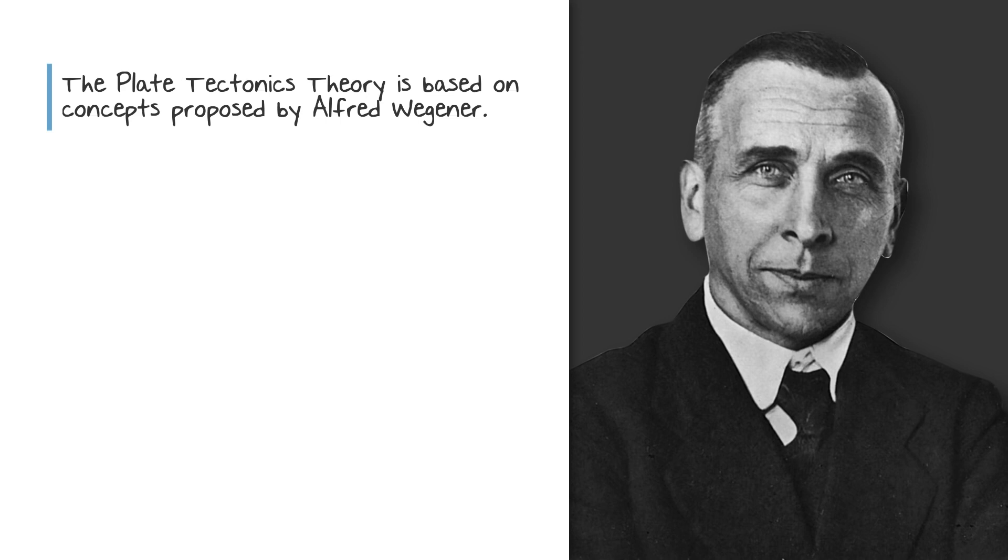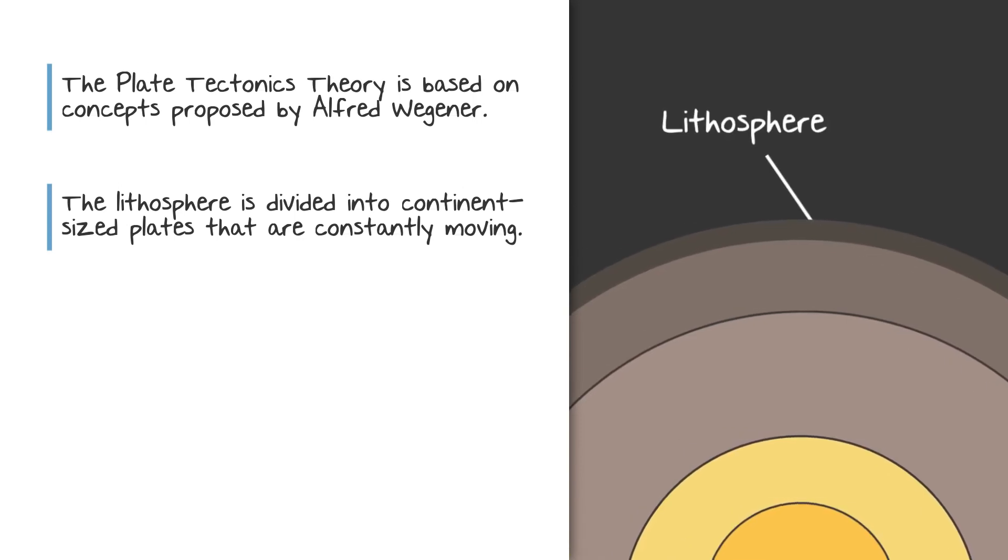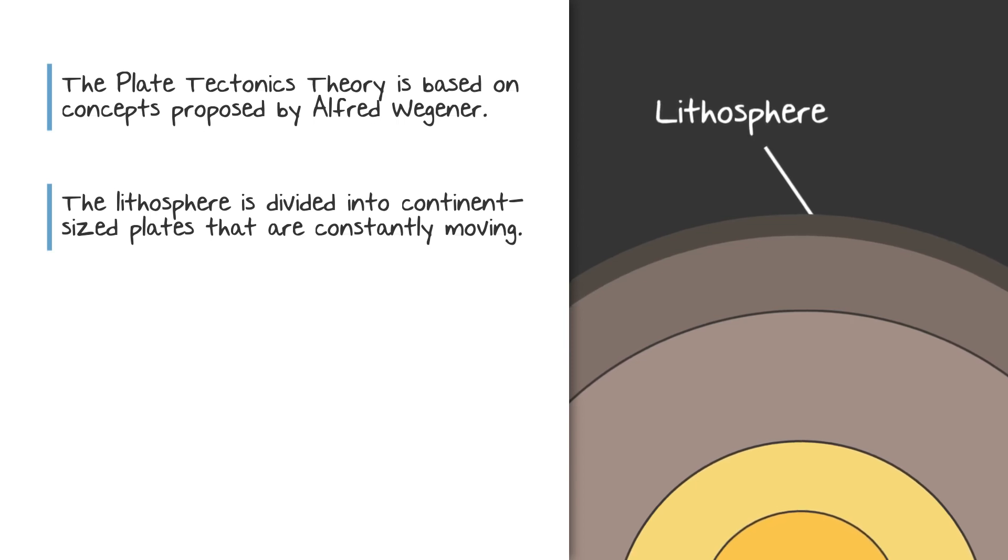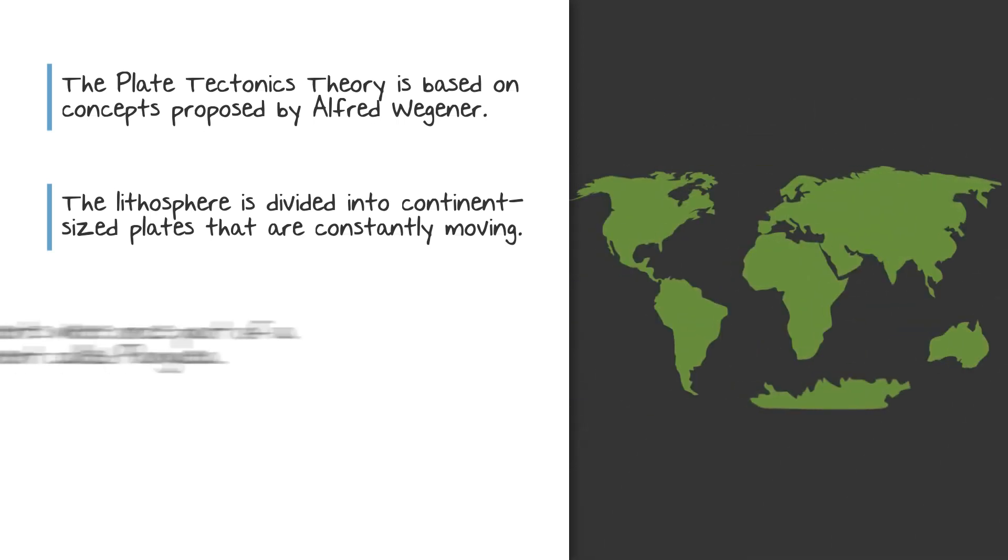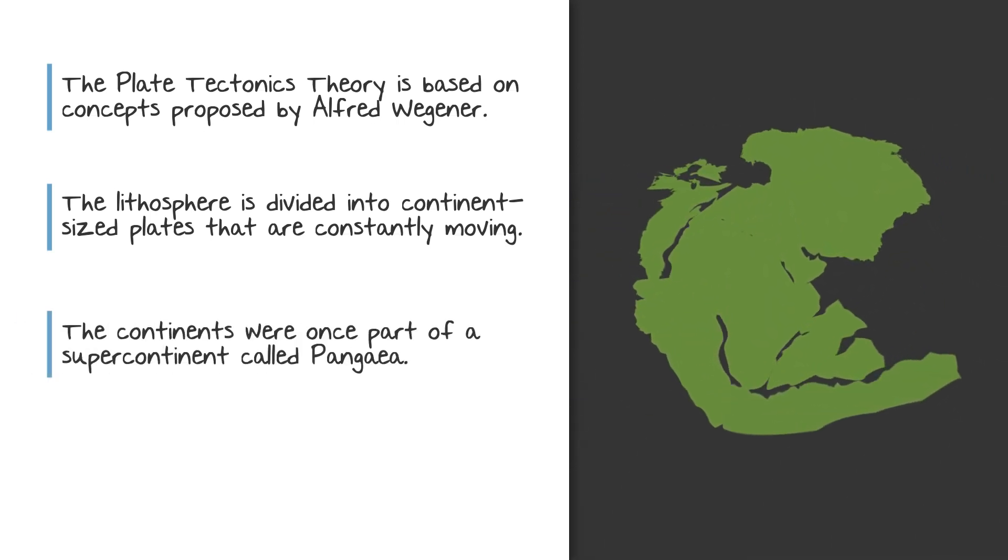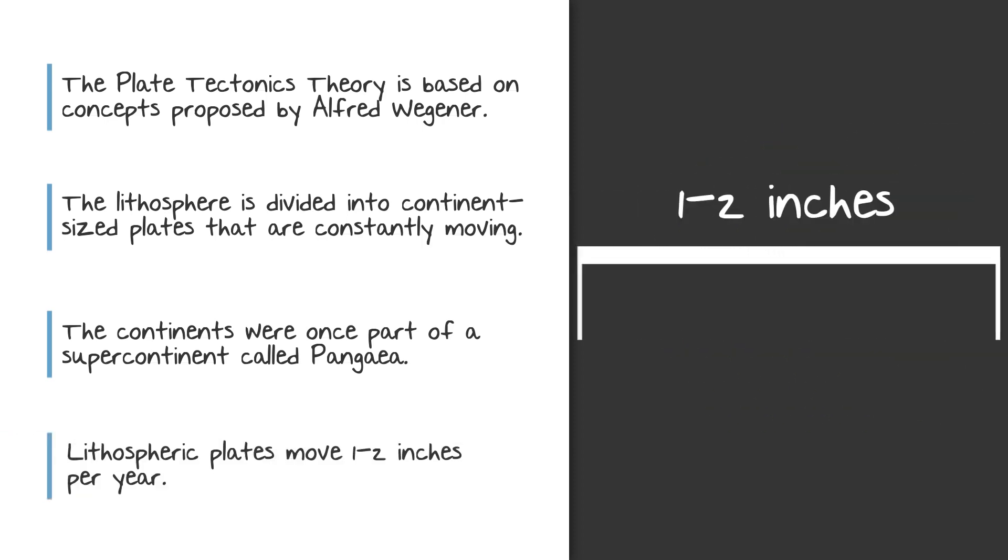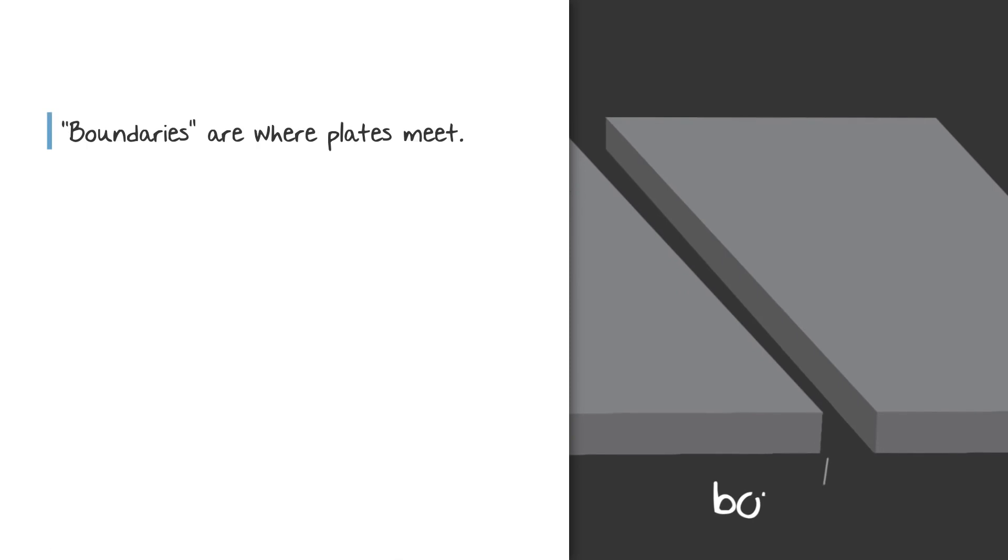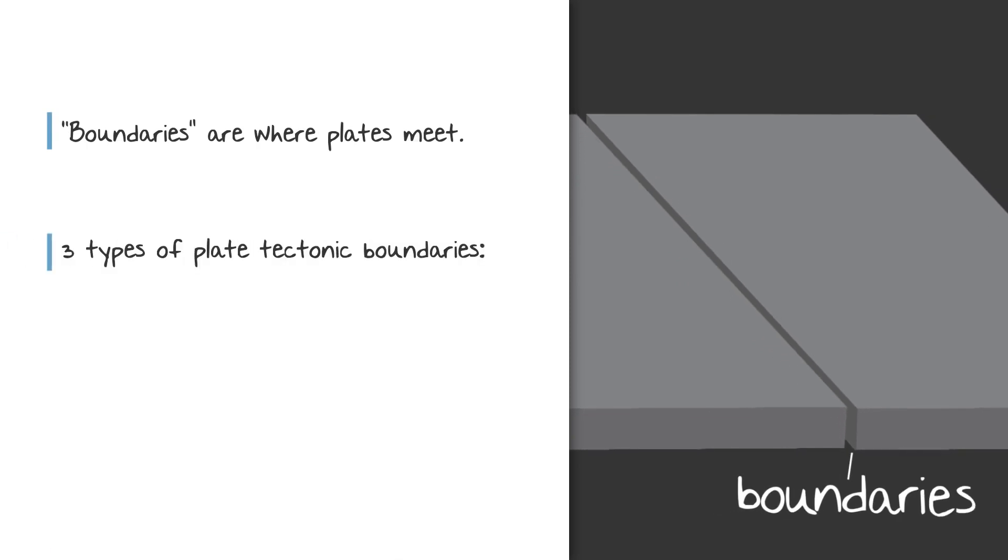So in review, the plate tectonics theory is based on concepts first proposed by Alfred Wegener in the early 20th century. It states that the Earth's outer mechanical layer, the lithosphere, is divided into large continent-sized plates that are always moving, leading many scientists to believe the continents we know today were once part of a supercontinent called Pangaea. These plates move one to two inches per year. Where they meet is called boundaries, and there are three different types.